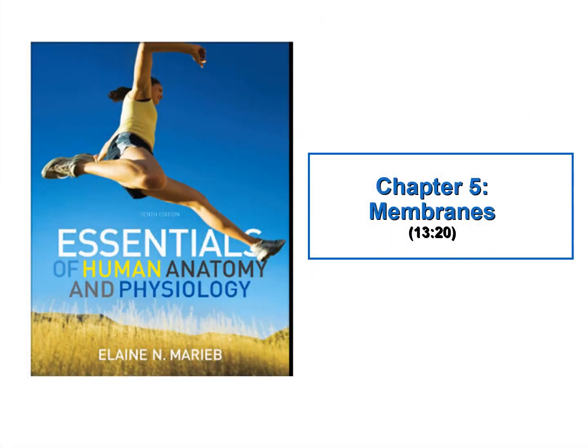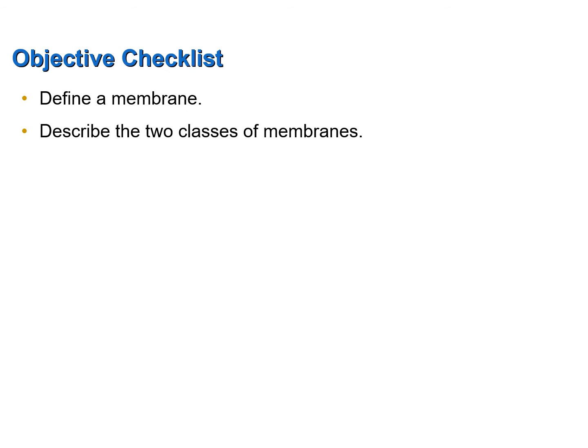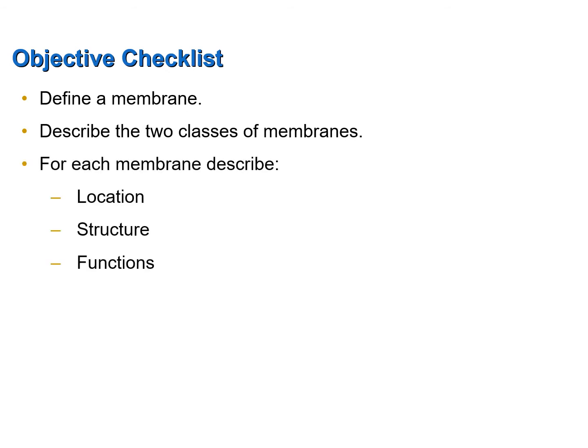This screencast discusses membranes, which can be found in Chapter 5 of your textbook. This screencast was designed to help you achieve the following objectives: define a membrane, describe the two classes of membranes, and for each specific membrane describe its location, its structure, and its functions.